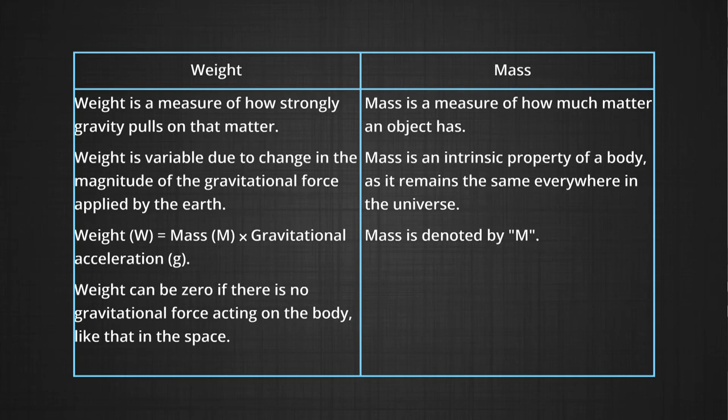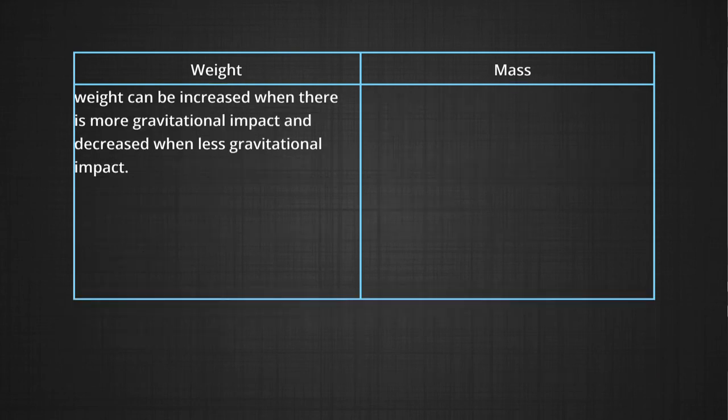Weight can be zero if there is no gravitational force acting on the body like in space. Mass can never be zero, for then the body will have no existence. Weight can be increased when there is more gravitational impact and decreased when there is less gravitational impact, while mass is indestructible.